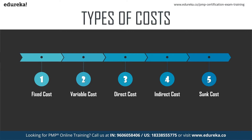Direct cost refers to cost clearly assigned to the project — the labor and materials directly involved in the project. Indirect cost, on the other hand, covers administration and overhead costs such as indirect materials, utilities, tax, insurance, property, repairs, etc.